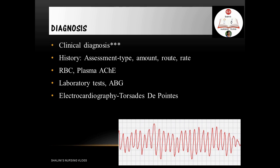Diagnosis is based on clinical history and suspicion. We must assess the type, amount, route, and rate of the organophosphorus compound that has been ingested, inhaled, or absorbed cutaneously. RBC and plasma acetylcholinesterase levels confirm the poisoning. Other tests include complete blood studies, electrolyte panels, ABG, and electrocardiography, which may show a torsades de pointes pattern on ECG.